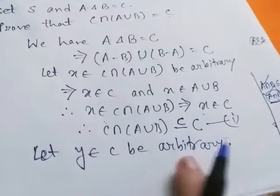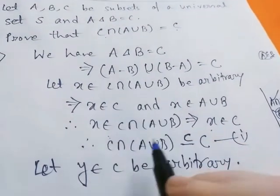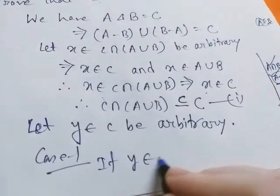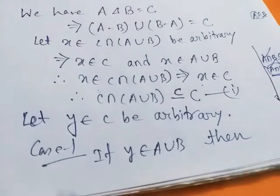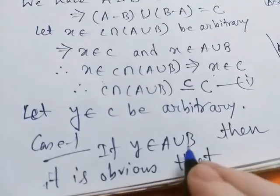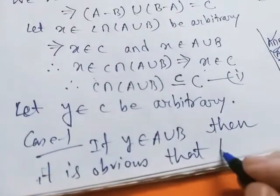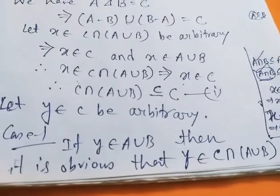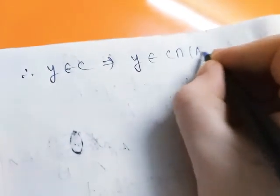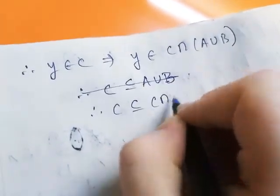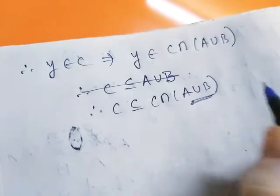To prove C subset of C intersection A union B, let y belong to C be arbitrary. We have two options: either y belongs to A union B, or y does not belong to A union B. Case one: if y belongs to A union B, then it is obvious that we have y belongs to C and y belongs to A union B, therefore y belongs to C intersection A union B. Therefore C is a subset of C intersection A union B if y belongs to A union B.